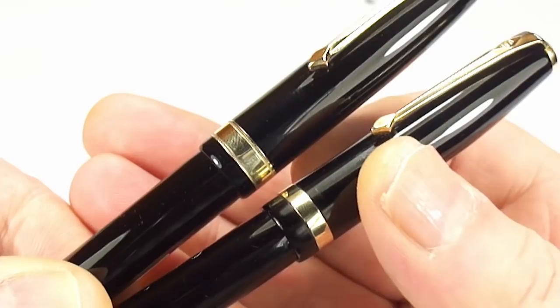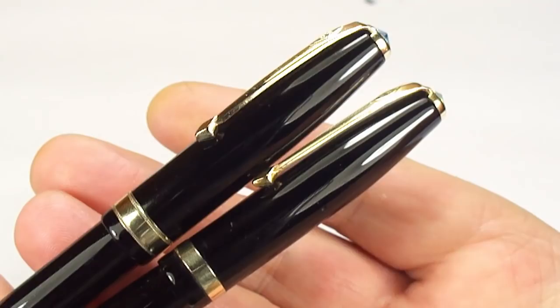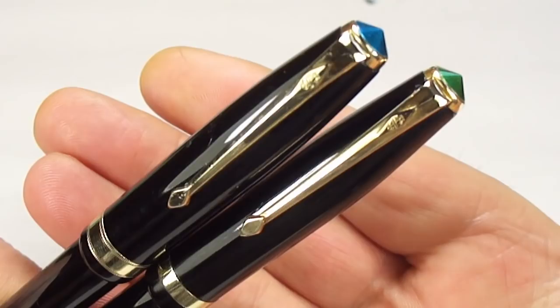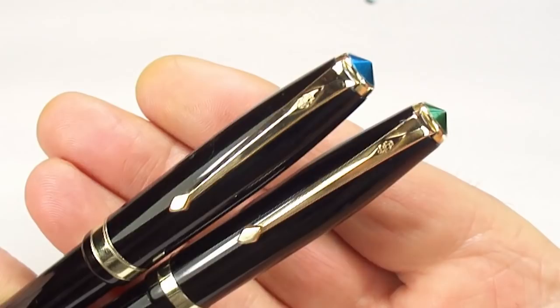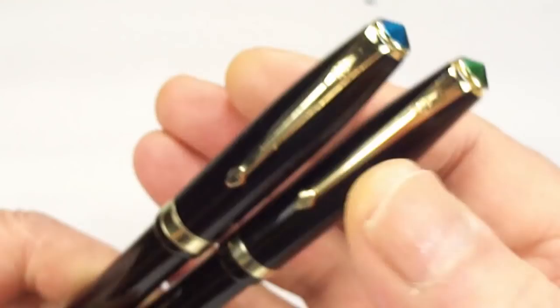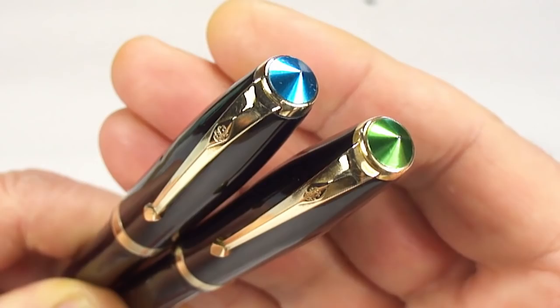The clips to the top there, quite basically both the same. You can see they're both what we term as the Conway Stewart diamond clips. As you can see there, they've both got the Conway Stewart diamond logos to the very top of the clips. And as you've already seen there, the difference being that one has the blue anodized aluminum stud and one has the green stud.